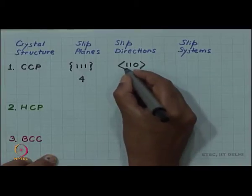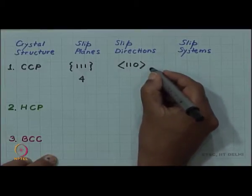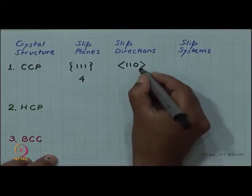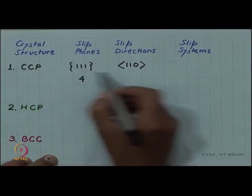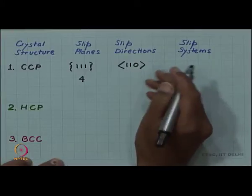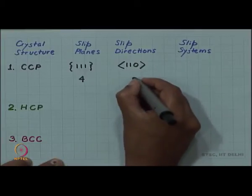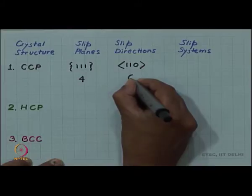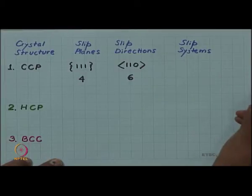And similarly, there are not just 110 one direction, this is a slip direction, this is a close-packed direction in the cubic close-packed structure and this is the face diagonal. And there are 6 different face diagonals in a CCP crystal. So the number here is 6.